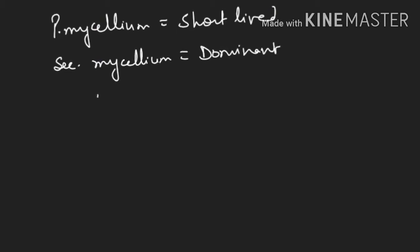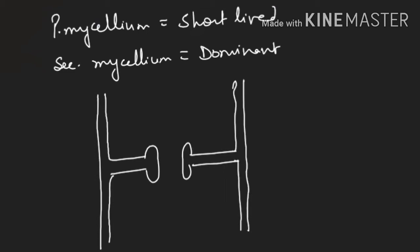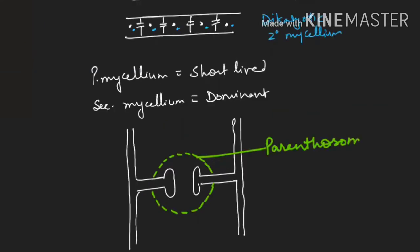Let me draw the diagram once again. This is the cell wall of the fungus and this is the dolipore septa — the ends will swell up to form a barrel-shaped structure. This is how the ends swell up to form the barrel-shaped structure, and we call this the dolipore septa. On either side of the dolipore septa you find a structure known as parenthosome. This is a special feature of Basidiomycetes.